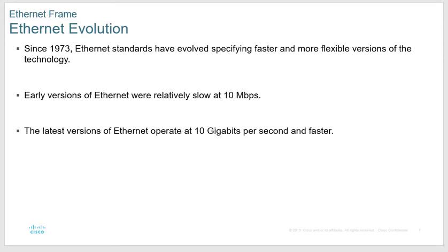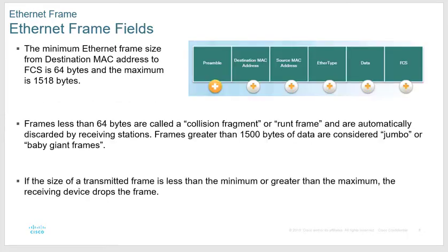Ethernet has been around a long time. There are some buildings where the regular wired phone systems are actually wired with category 3 cable. Way back in 1973 is kind of where it started, at 10 megabits per second on cat 3. Here's that frame structure: we have a preamble signaling the start of the frame.